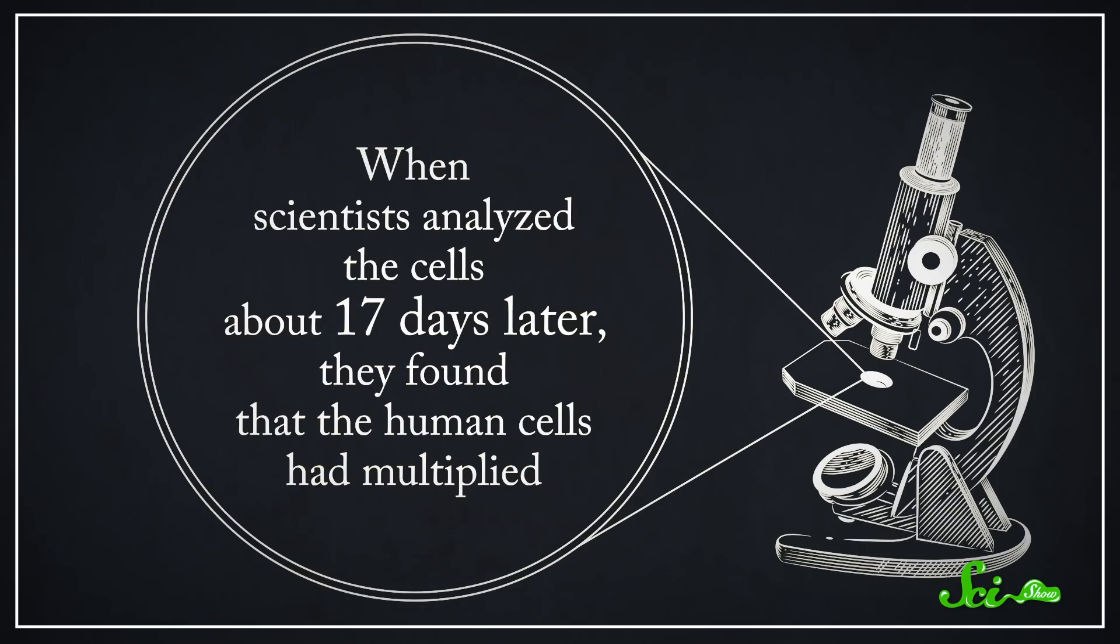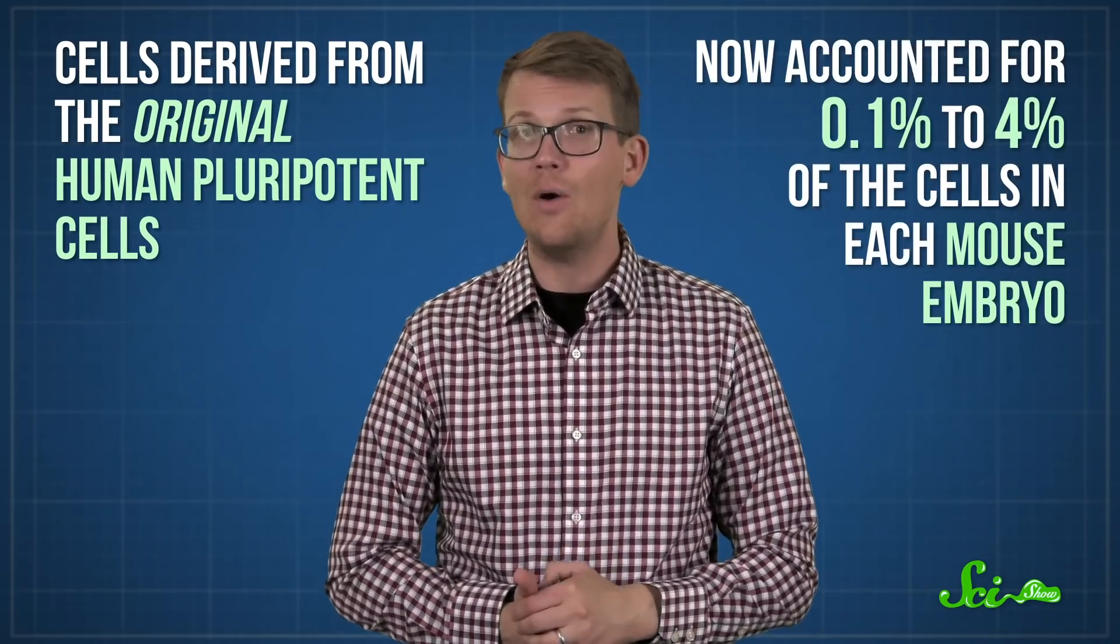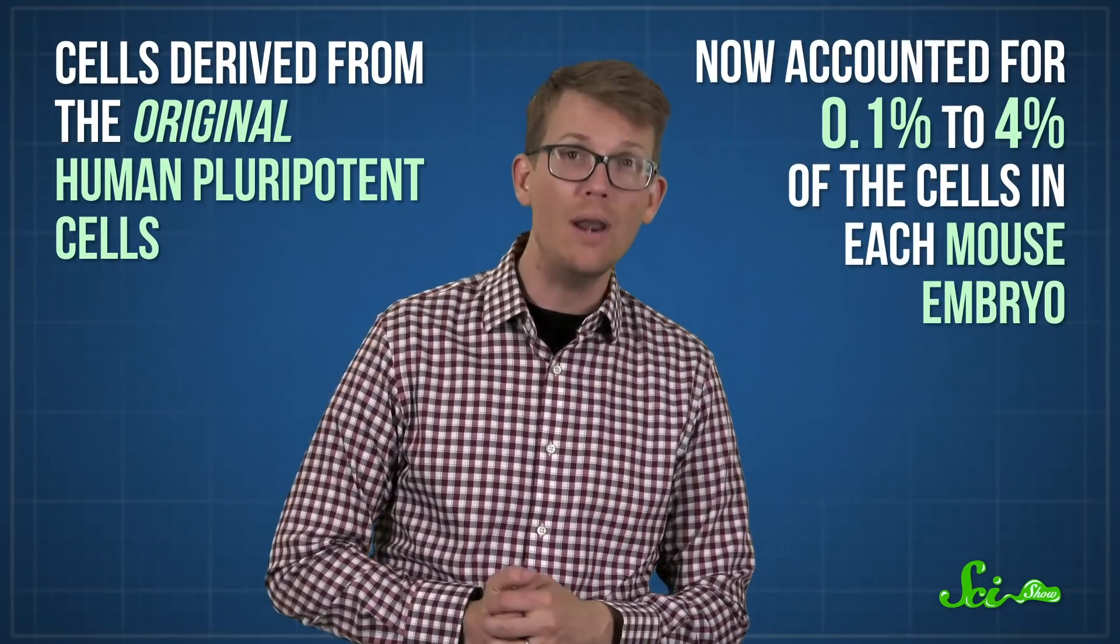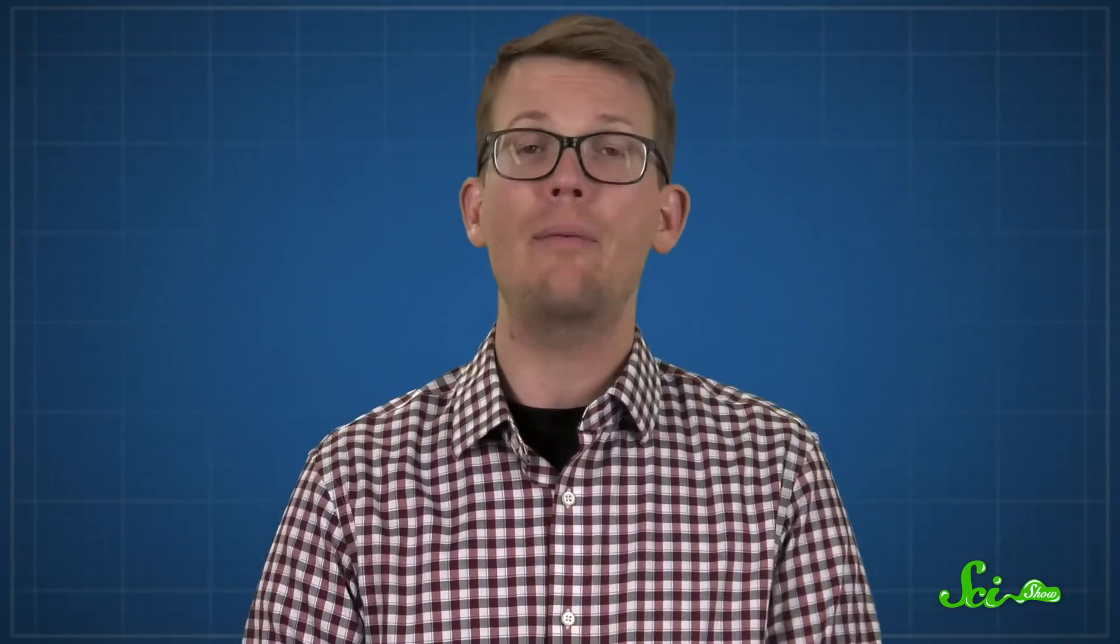When scientists analyzed the cells about 17 days later, they found that the human cells had multiplied. Cells derived from the original human pluripotent cells now accounted for 0.1% to 4% of the cells in each mouse embryo. Considering the job of a mouse embryo is to create a mouse, not a human, that's a lot. Despite being inside a mouse, the stem cells had begun developing into different types of human cells,